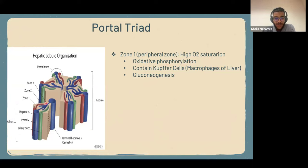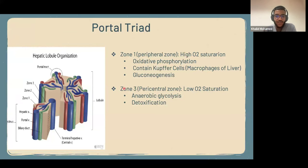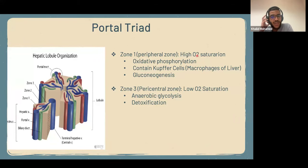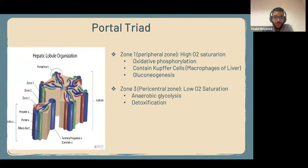Zone three, on the other hand, is furthest away from the arteriole and has the lowest oxygen saturation. So what type of metabolism does it have? Anaerobic glycolysis. And its main function is detoxification — solubilizing everything. So to summarize: zone one uses oxidative phosphorylation, contains Kupffer cells, and is the site of gluconeogenesis. Zone three, also called the pericentral zone, is where anaerobic glycolysis takes place and is the site of detoxification.